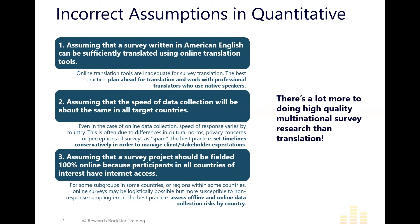There's a lot more to doing high-quality multinational survey research than just translation, but we have to start with awesome translation. Then we have to make sure we're building a great schedule that sets reasonable expectations. And we have to think carefully about our actual data collection mode — do we need a multimode approach? If we say no, be ready to defend that, because depending on the countries and populations of interest, that choice could have implications for data quality.